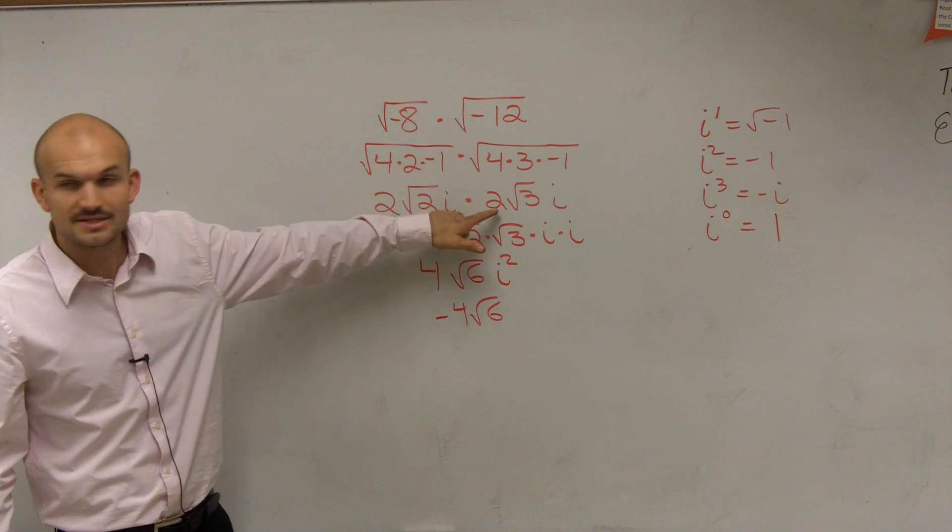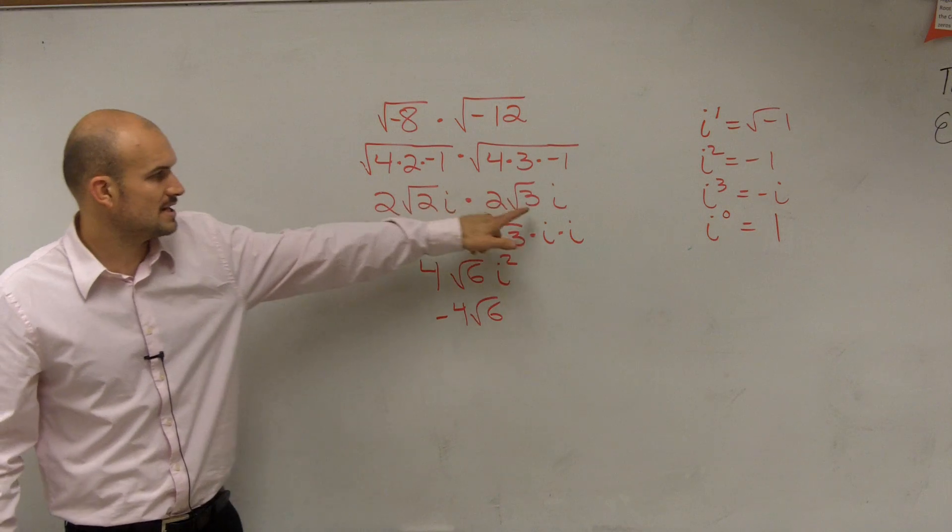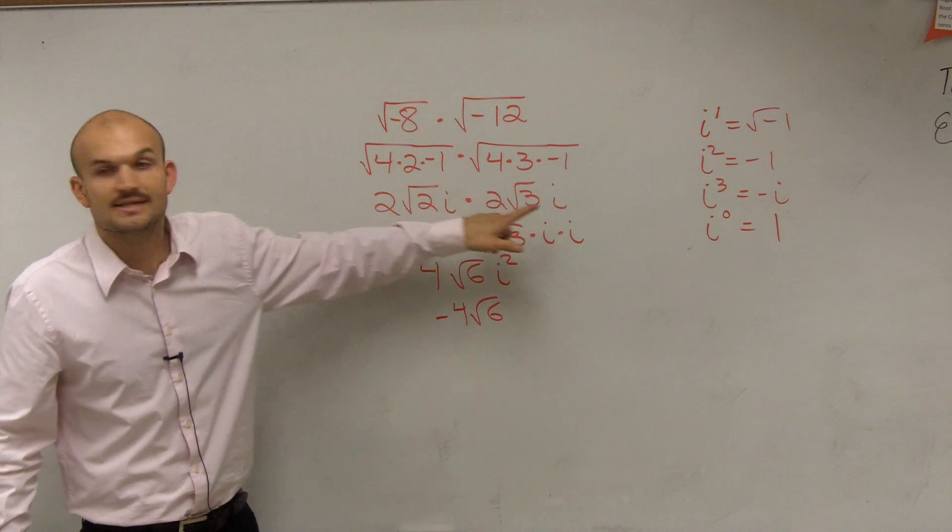I did 2 times that 2, square root of 2 times square root of 3, and then i times i. That's where they came from.